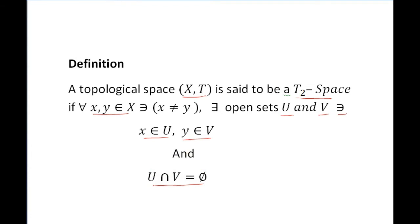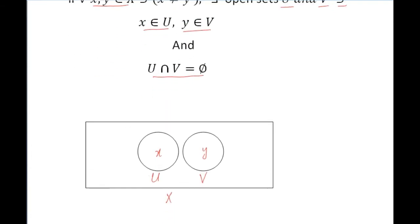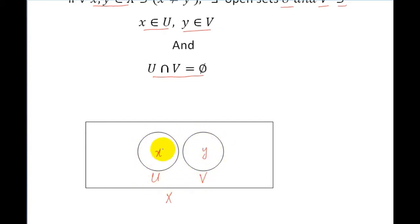Now let's look at a figure. Here X is a topological space, and X, Y are two distinct points. For these two distinct points, we have two open sets U and V, and these two open sets are clearly disjoint: X is contained in U, Y is contained in V, and U intersection V is equal to the empty set.